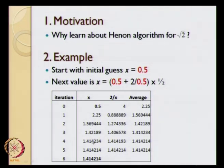We continue this over and over again until a certain point. In this particular case, I have done the Excel simulations up to iteration number 6. What we see over here is the first value of x, the first initial guess of x was 0.5. The second initial guess was 2.25.